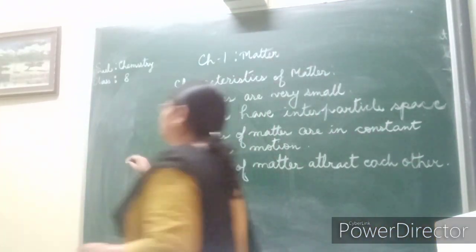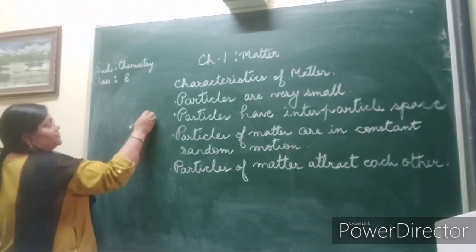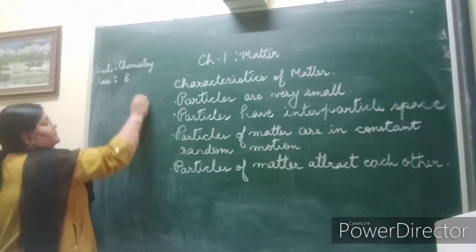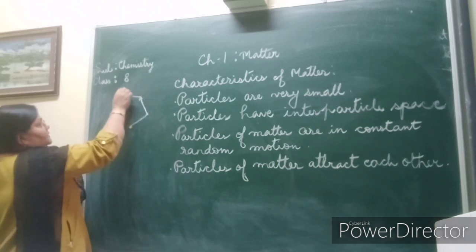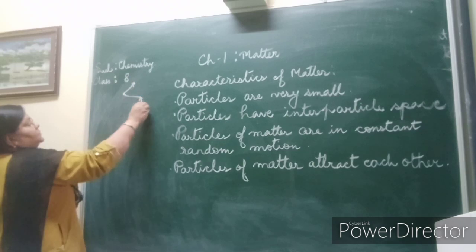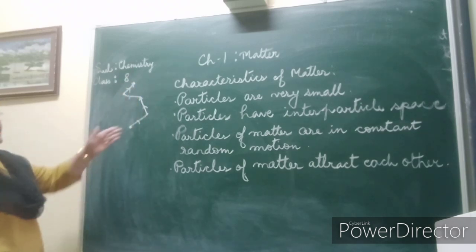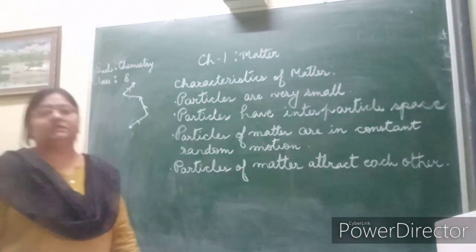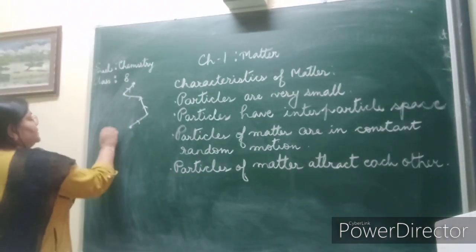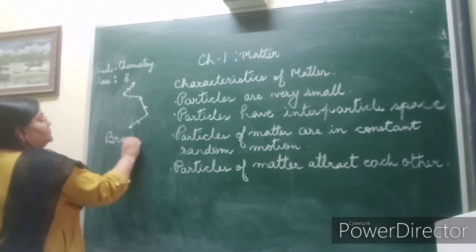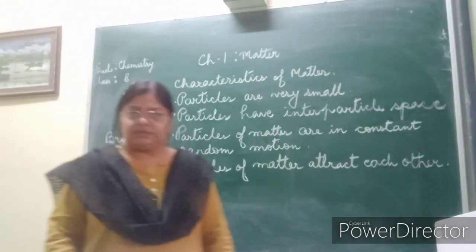This random movement of suspended particles - whether on the surface of a liquid or in air - is called Brownian movement. If you draw it, suppose you take a particle - it is pushed here, then pushed to another side, then pushed again elsewhere. This random movement of particles is called Brownian movement, named after Robert Brown who discovered it.